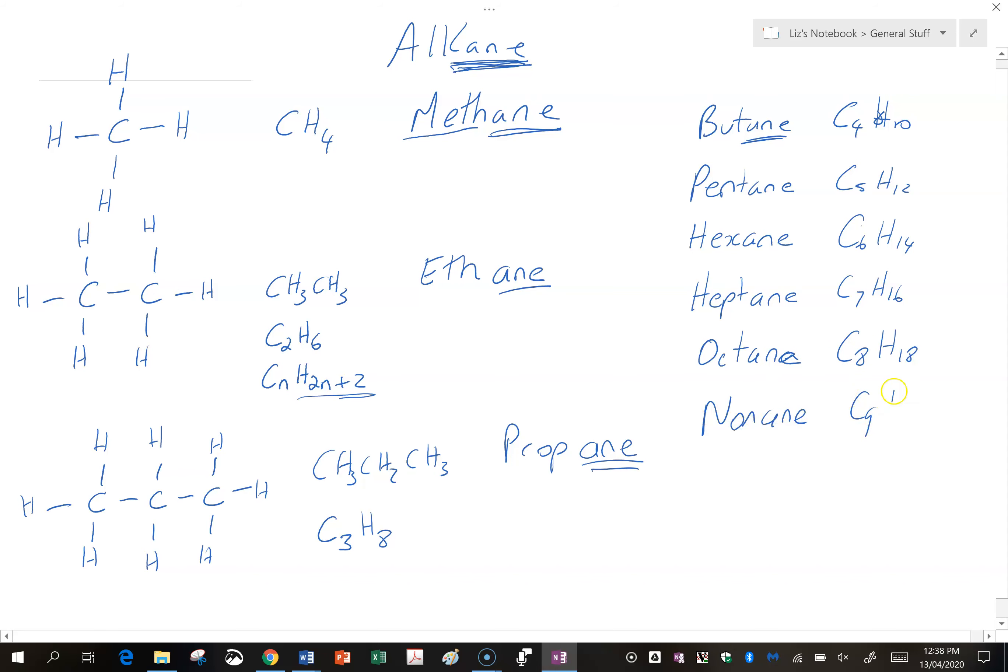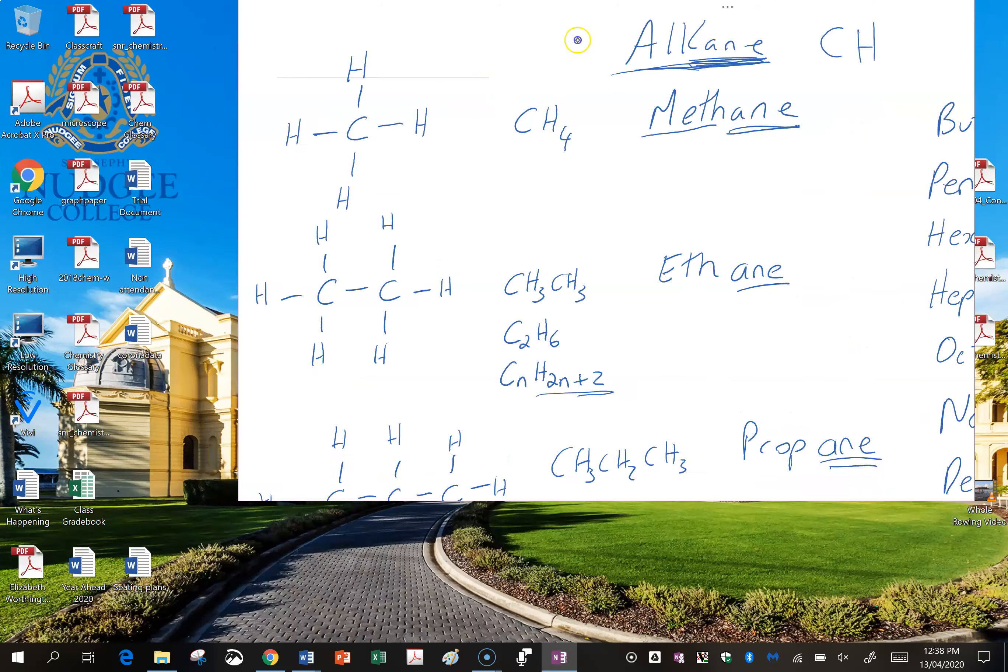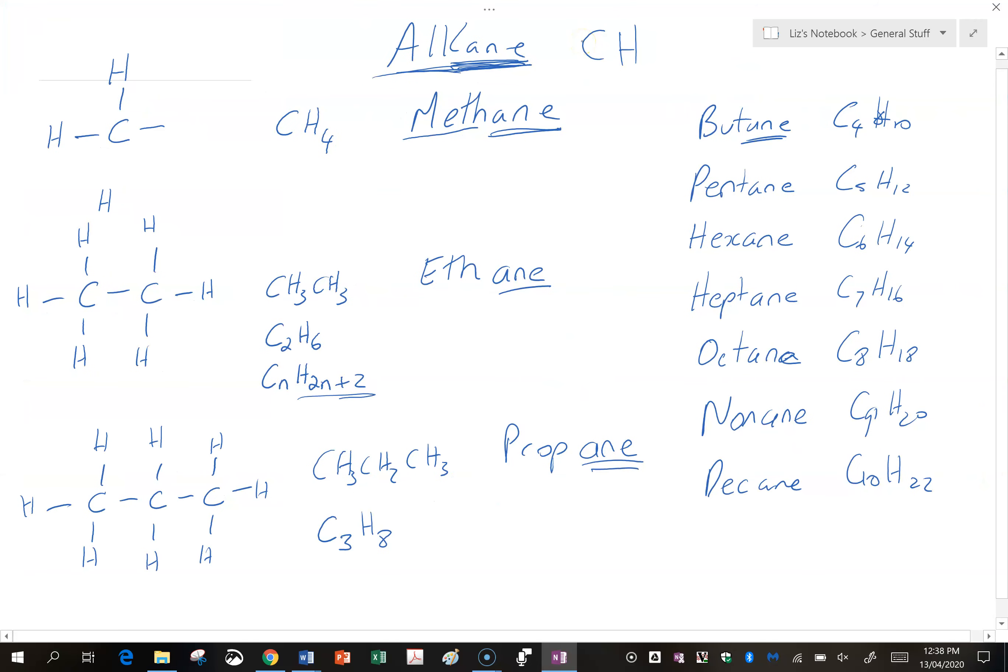So again, alkanes: only carbons and hydrogens, so these are your hydrocarbon organic molecules. And the counting goes meth, eth, prop, but, pent, hex, hept, oct, non, and dec. And they all end in -ane, signaling that there is only carbon and hydrogen single bonds present.